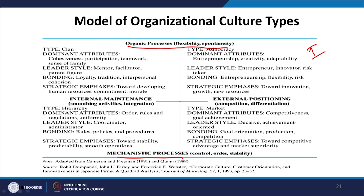When the culture is high on organic processes but low on external positioning — that is, high on internal maintenance — it is called clan culture. Dominant attributes are cohesiveness, participation, teamwork, and a sense of family. Leadership style is mentor, facilitator, and parent figure. Bonding is through loyalty, tradition, and interpersonal cohesion. Strategic emphasis is towards developing human resources, commitment, and morale.